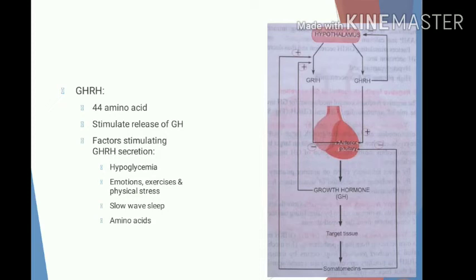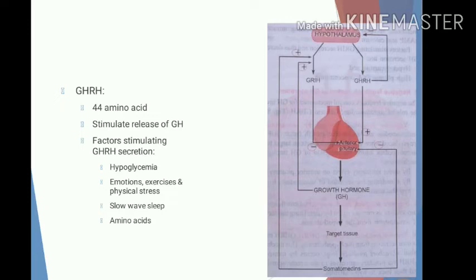Growth hormone secretion is regulated by the hypothalamus, which controls it by releasing GHRH and GHRIH — that is, growth hormone releasing hormone and growth hormone release inhibiting hormone. GHRH is a polypeptide having 44 amino acids and it stimulates growth hormone secretion from the anterior pituitary. One factor that stimulates GHRH secretion is hypoglycemia, which acts through glucoreceptor cells present in the ventromedial nucleus of the hypothalamus.